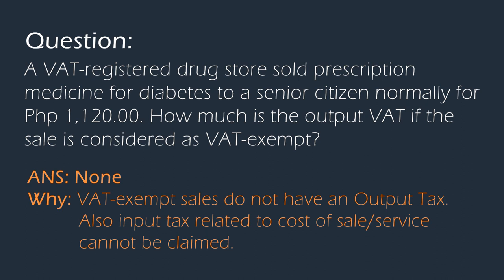Note that for VAT-exempt sales, being exempted, there would be no output tax. While for zero-rated sales, because the rate is zero, there would still be output tax, but it would be zero. Also, for a complete list of VAT-exempt transactions, you can also visit the website of the BIR.